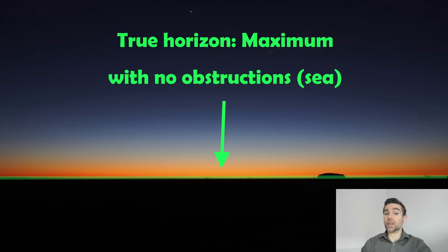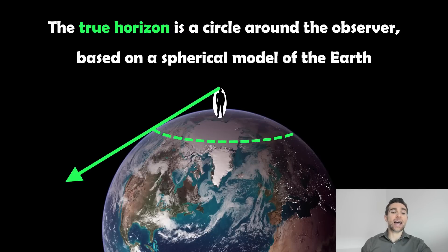And this is the maximum really, when you don't have any obstructions. So there's no mountains there, trees, buildings. This is then the true horizon. And how does it actually work? Well, if we're on the curved surface of the planet, if we then draw a circle around us, the true horizon is essentially a circle around the observer based on a spherical model of Earth. So as we rotate around, we're looking at a different part of that circle, which is the true horizon.